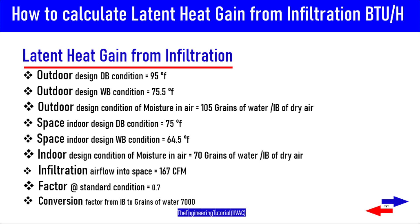The factor 0.7 is not a constant — it is derived from the properties of air at standard conditions of 69°F dry air at sea level. Air at other conditions and elevations will cause this factor to change.